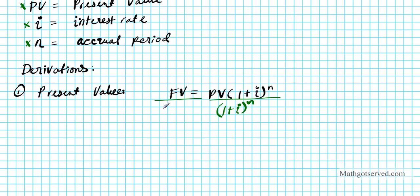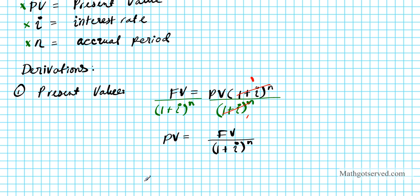On both sides we divide by 1 plus i to the nth power. Using the reflexive property of equality, this quantity divides out, and we end up with: present value PV equals the future value divided by 1 plus i to the nth power. That's our first formula derived from the future value formula.